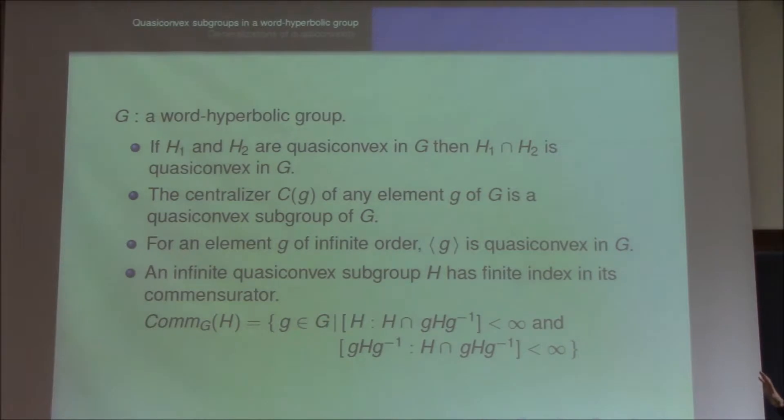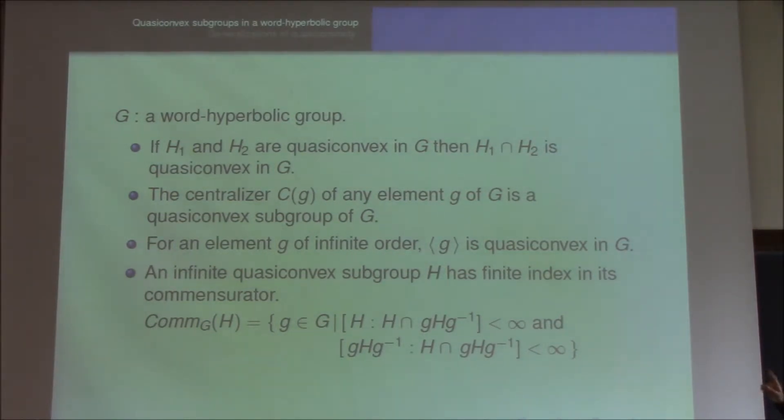An infinite quasi-convex subgroup has finite index in its commensurator. Here, the commensurator is the set of group elements g such that the intersection of H and gHg-inverse has finite index in H and gHg-inverse. So the commensurator indeed contains the subgroup H and H has finite index in the commensurator.